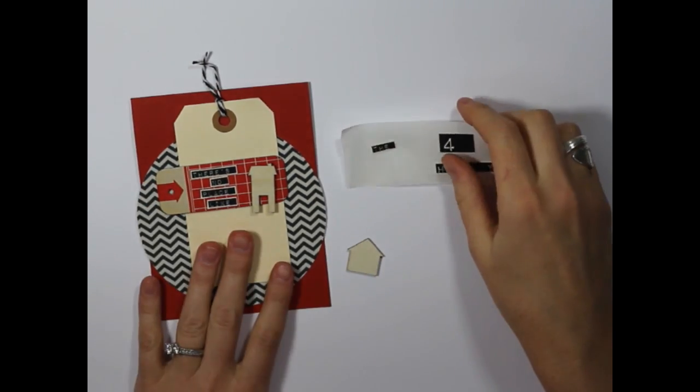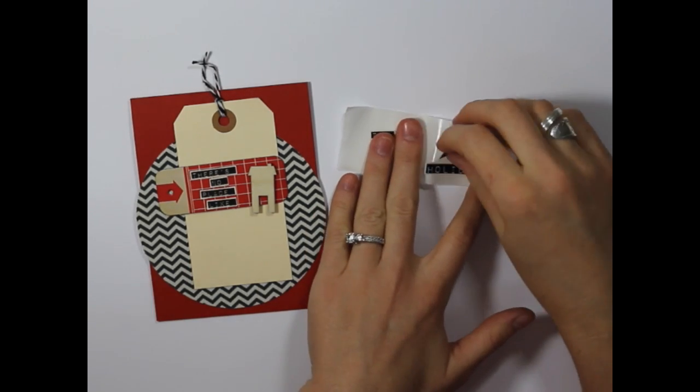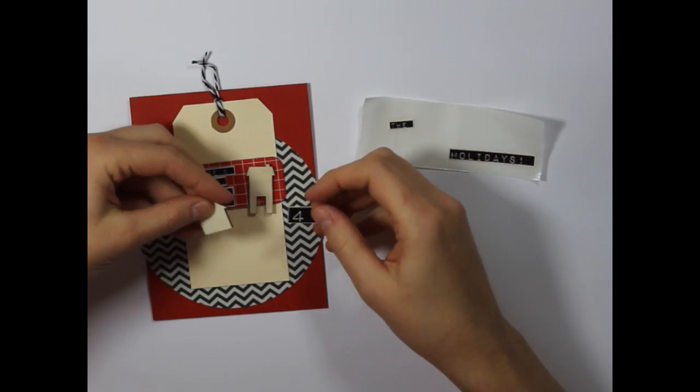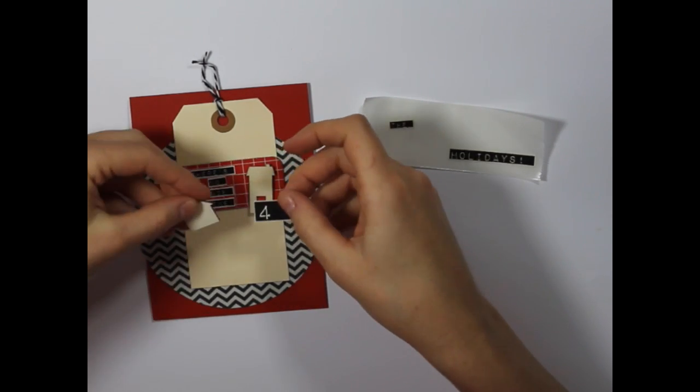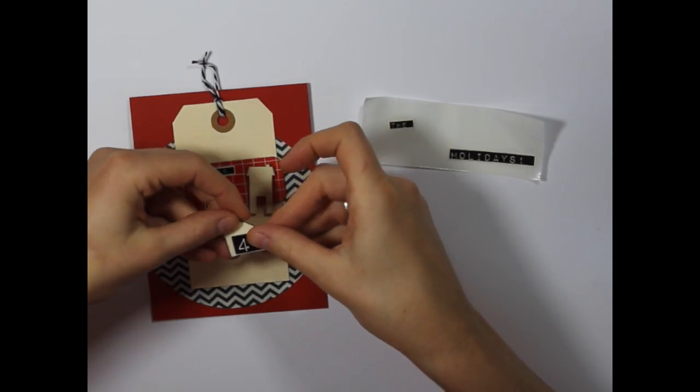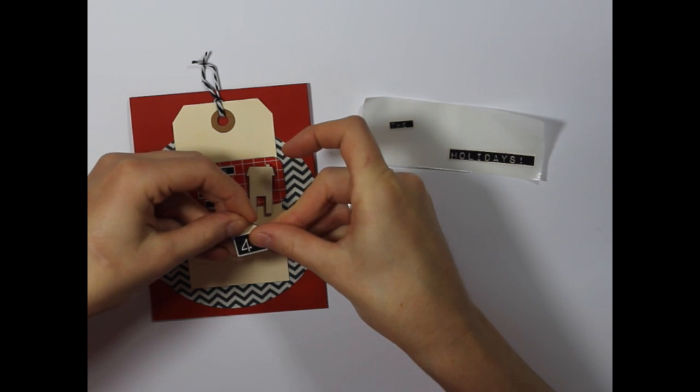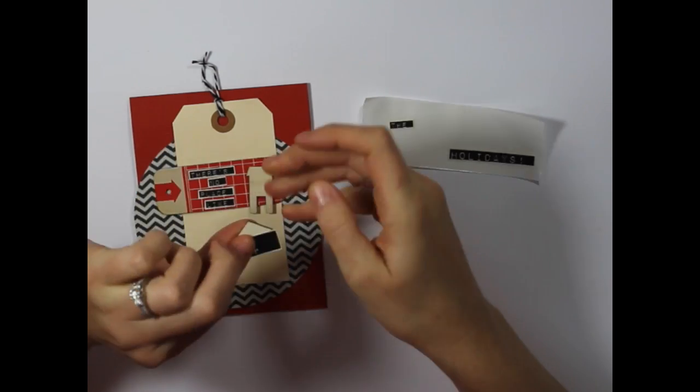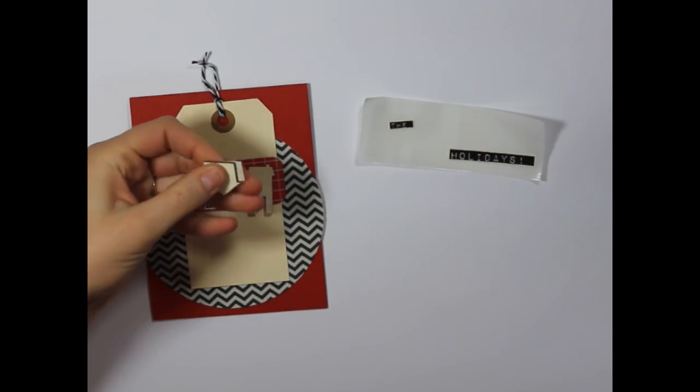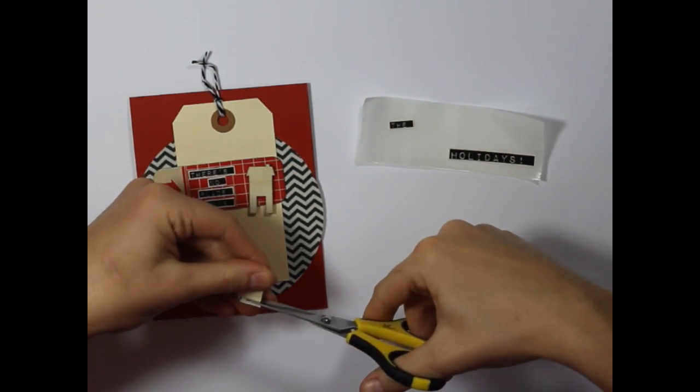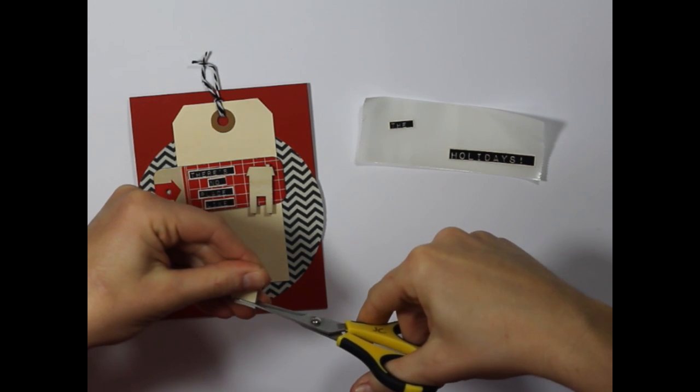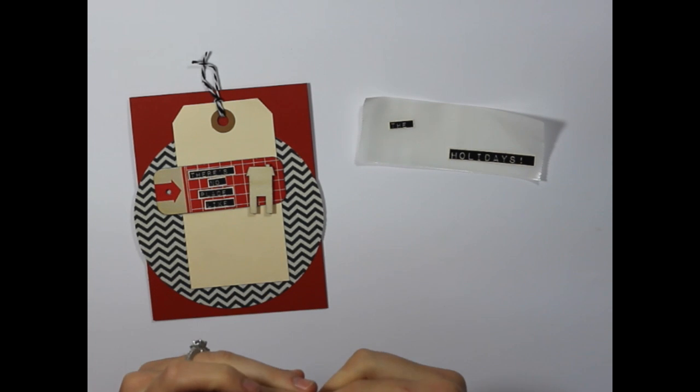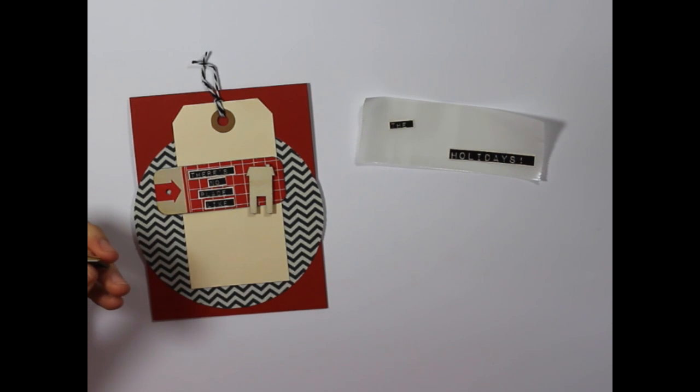And then for the word for, I thought it would be kind of fun to use the number four instead. I wanted the number four to stand out, so I'm just going to adhere it onto one of the more plain wooden veneer homes. It's a little bit long for that, so I'm just going to trim the excess.